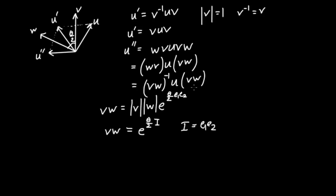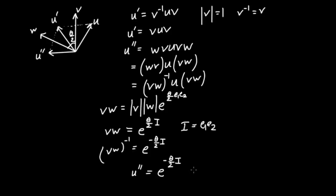Substituting in, the inverse (vw) inverse equals e to the (−theta/2 · i), which means u double prime equals e to the (−theta/2 · i) times u times e to the (theta/2 · i). This formula means the transformation from u to u double prime is a rotation by theta — double the angle found in the argument, so double theta/2, or just theta — in the plane i, the e1 e2 plane.